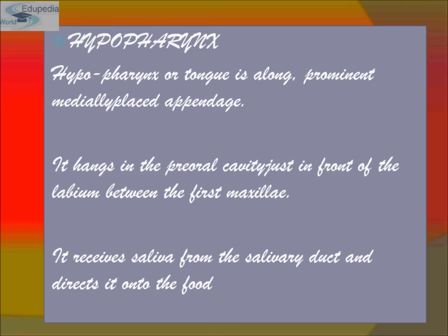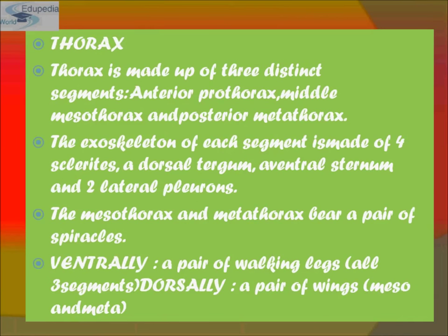Thorax is made up of three segments: anterior prothorax, middle mesothorax, and posterior metathorax. The exoskeleton of each segment is made up of four sclerites — one dorsal tergum, one ventral sternum, and two lateral pleurons. Mesothorax and metathorax bear a pair of spiracles. They also have walking legs, and dorsally, a pair of wings.